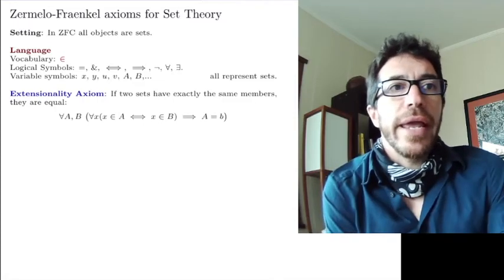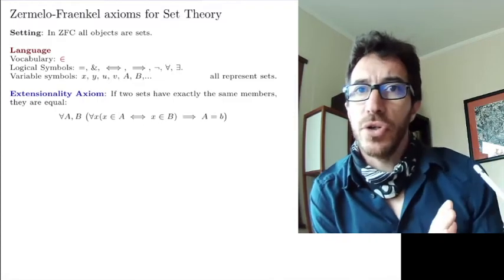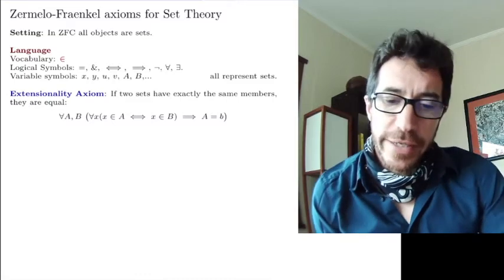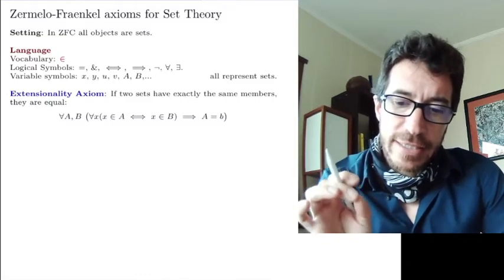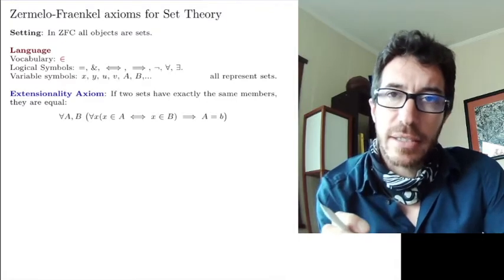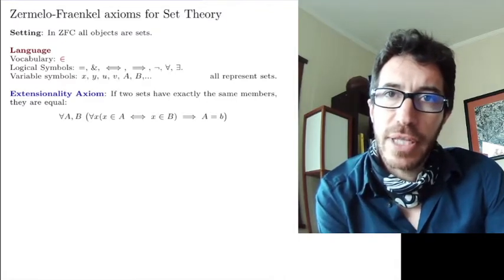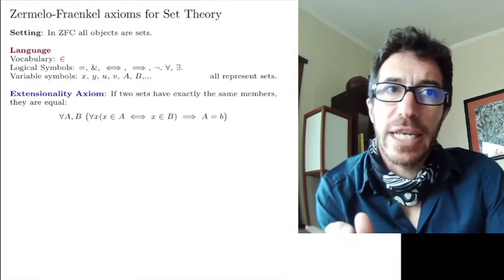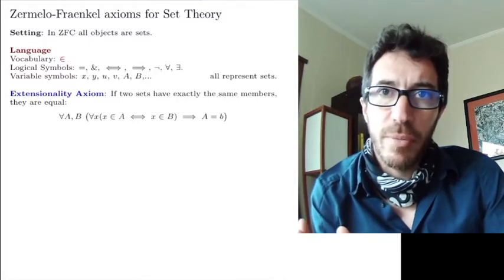Okay, let's start with the axioms. Axiom number one, extensionality axiom. This is the one we saw in the previous video. It says that if two sets have exactly the same members, they are equal, right? So what makes a set is the elements. That's all that matters about a set, which elements it has.